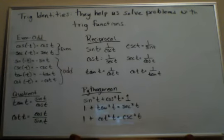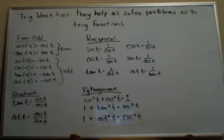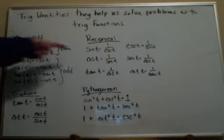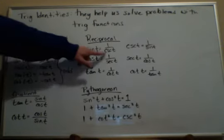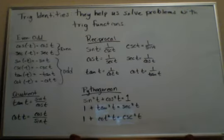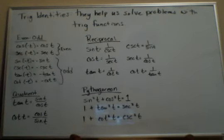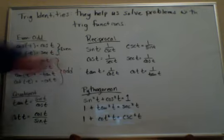We have our reciprocal identities. Again, these are ones that you should be aware of already, I think, simply because we know that sine and cosecant are reciprocals of one another. So therefore the sine is equal to one over the cosecant and cosecant is equal to one over sine, the reciprocal of sine. The cosine is equal to the reciprocal of secant and secant is equal to the reciprocal of cosine and so forth.